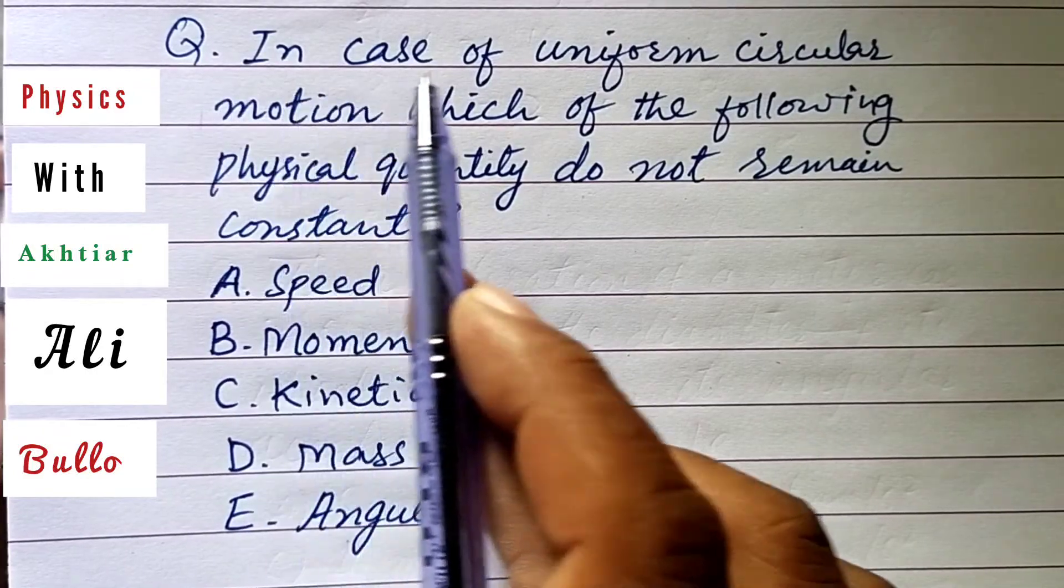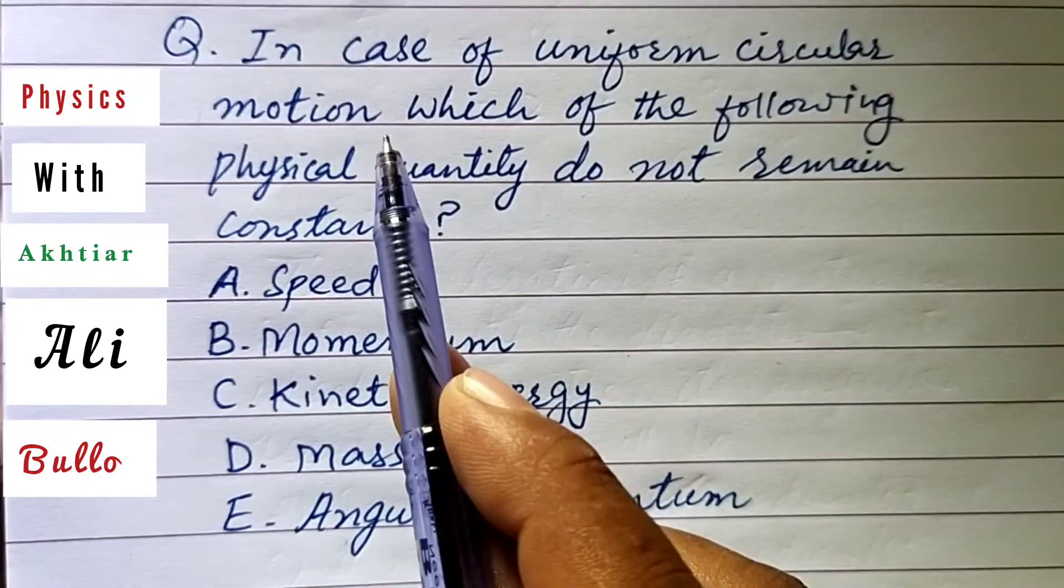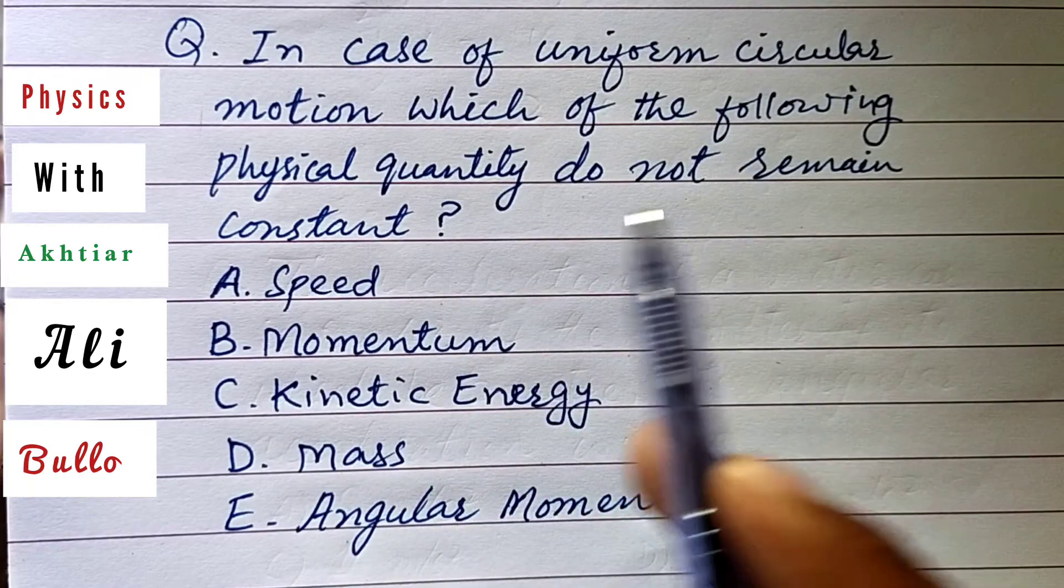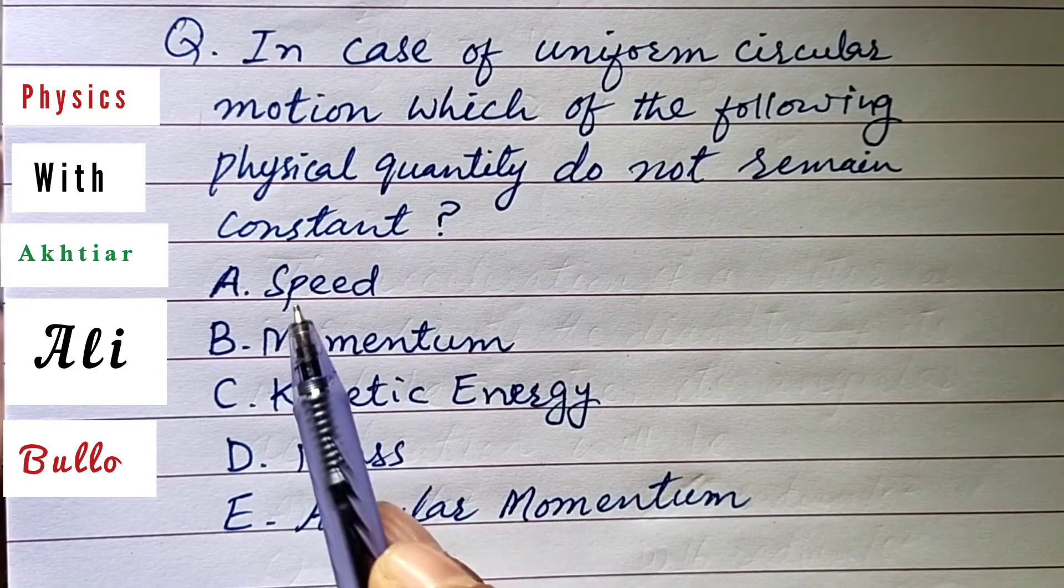The question is: in case of uniform circular motion, which of the following physical quantities do not remain constant? A.